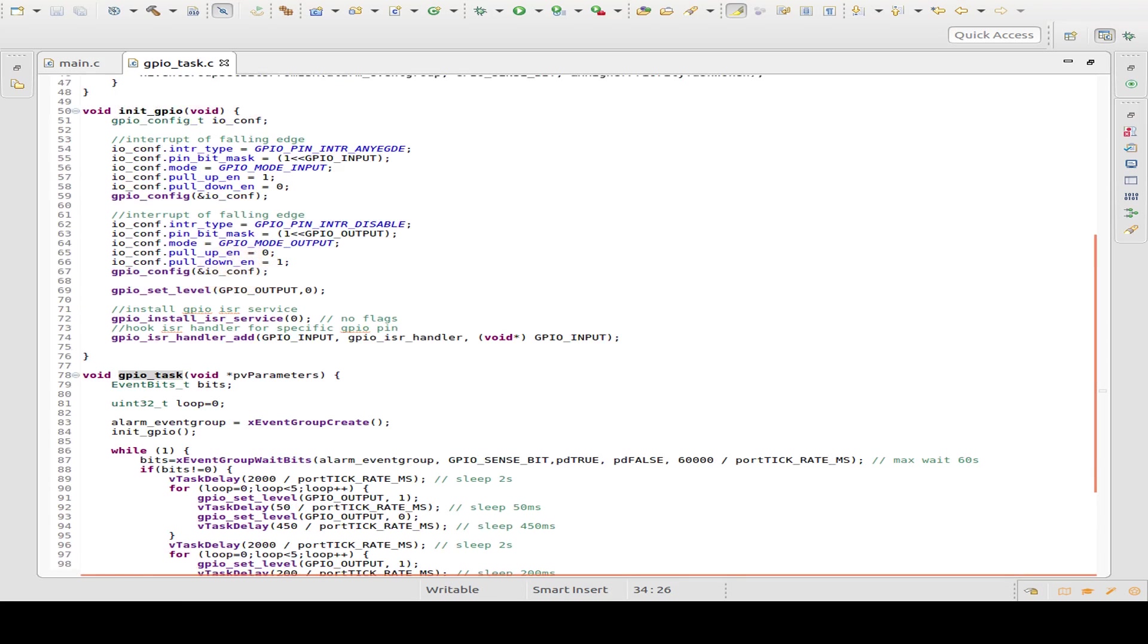So let's have a look at this function. We set our input pin and we define that we have an interrupt at any edge. Then we set a pull up resistor and no pull down. And this is our input pin. And we also define our output pin.